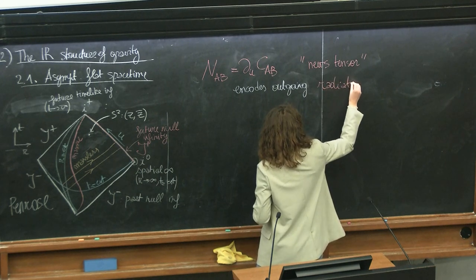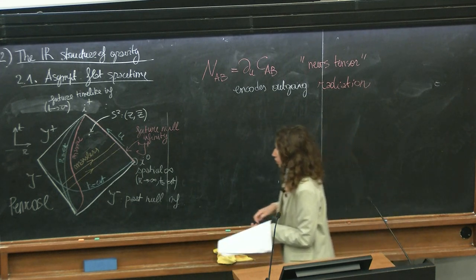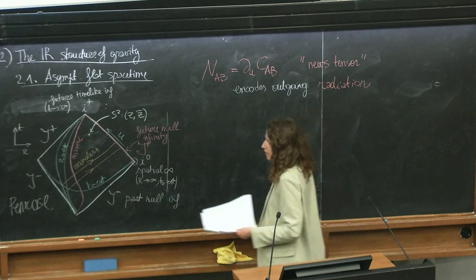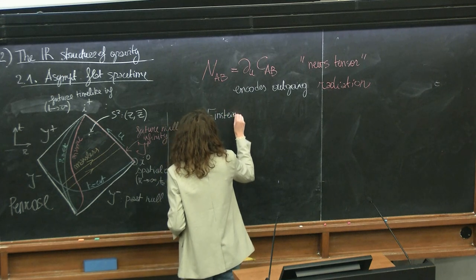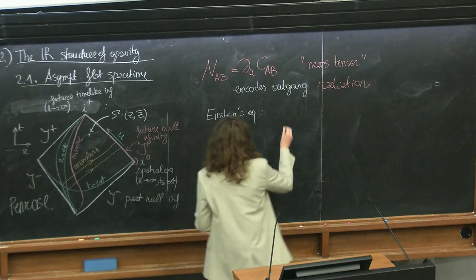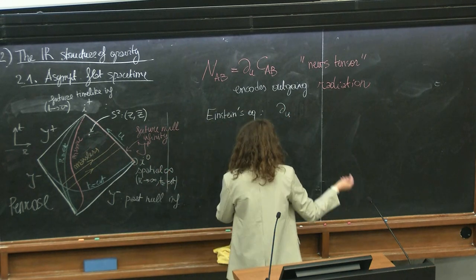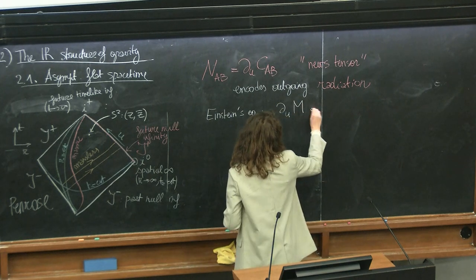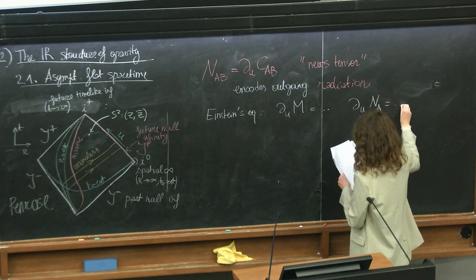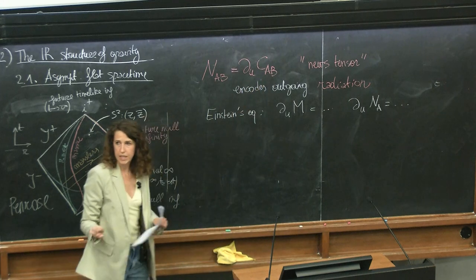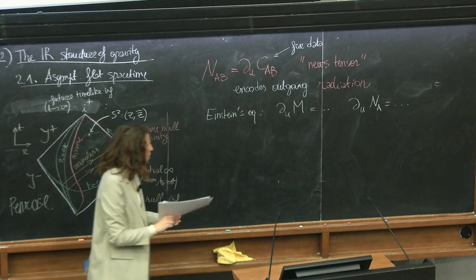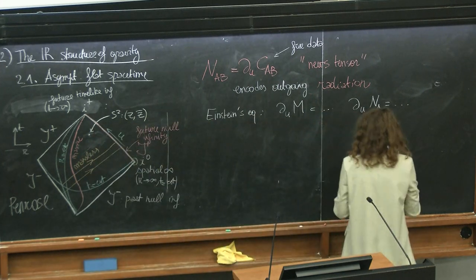Why is the shear written in red, while M and N are in green? The difference is that Einstein's equations imply some evolution or constraint equations on the Bondi mass and the angular momentum aspect. If you solve Einstein's equations order by order in R, you see that the time derivative of M is constrained to be something. The same holds for N_Z. On the other hand, C_{AB} is not constrained — it is a free data that you put into the theory, qualitatively different from the other two.